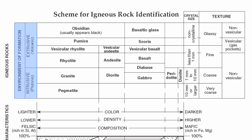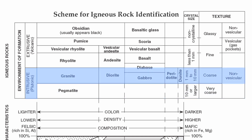On the left side, this is your environment of formation. You have your intrusive rocks. Intrusive rocks are formed deep below the surface with really slow cooling of the magma. That's going to include your very coarse rocks, such as pegmatite, and your coarse rocks of granite, diorite, diabase, gabbro, peridotite, and dunite.